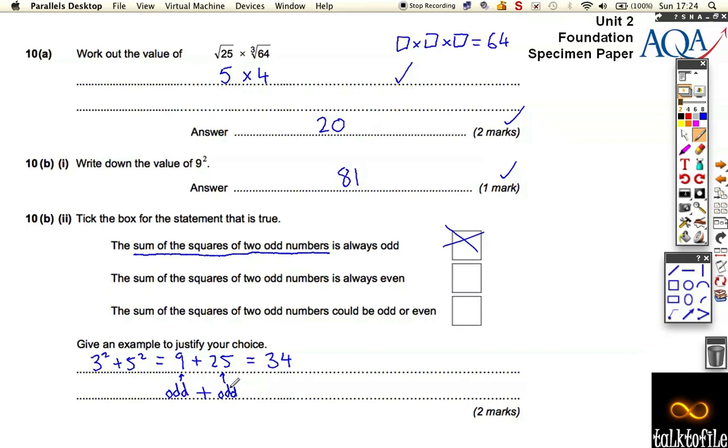So you're always going to have to do some odd number plus some odd number, no matter what you start with. As long as these first two are odd, you're always going to have an odd plus an odd once you've squared them. An odd plus an odd is always an even, so it's going to be this middle box here.